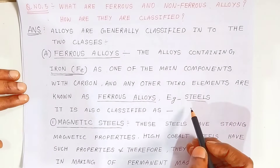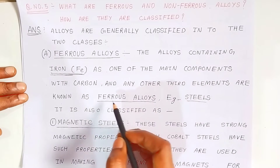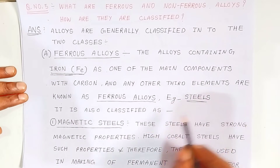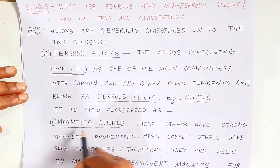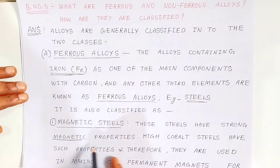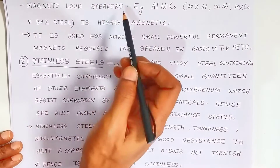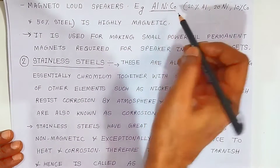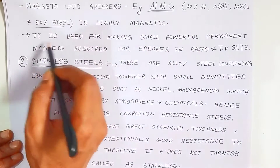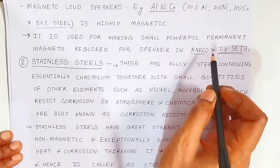Ferrous alloys are classified into several categories. The first category is magnetic steels. Magnetic steels have strong magnetic properties. High cobalt steels have such properties and are used in making permanent magnets for magnetos and loudspeakers. An example is alnico, which contains 20% aluminium, 20% nickel, 10% cobalt, and 50% steel. It is highly magnetic and used for making small powerful magnets required in radio and TV speakers.